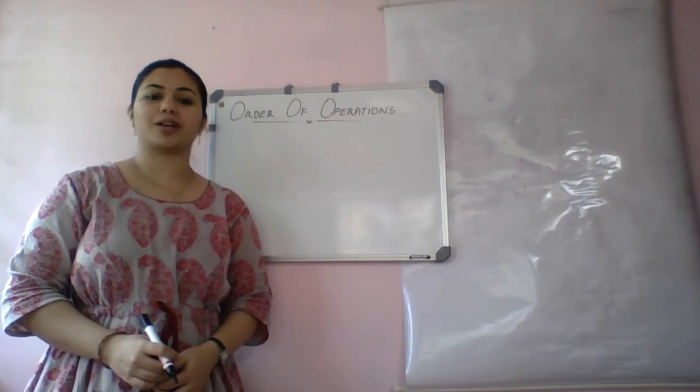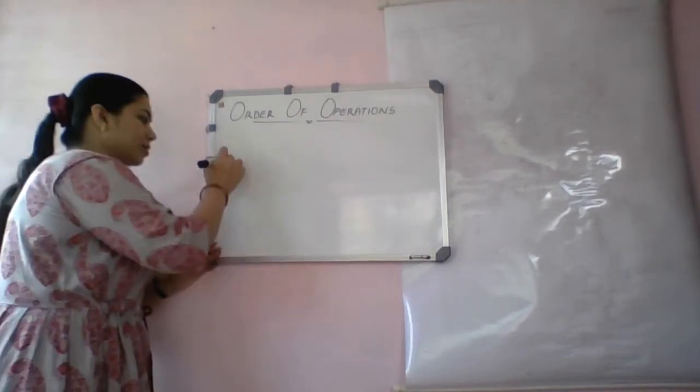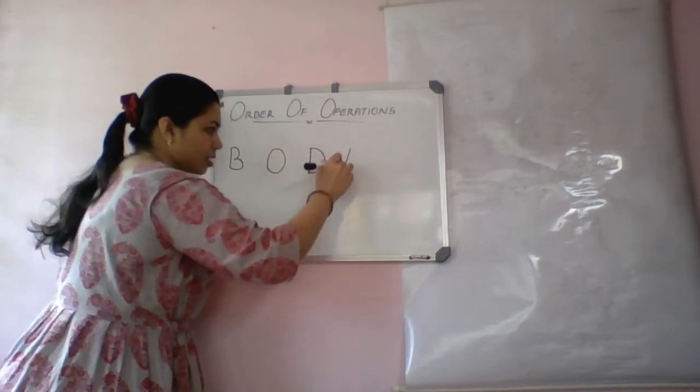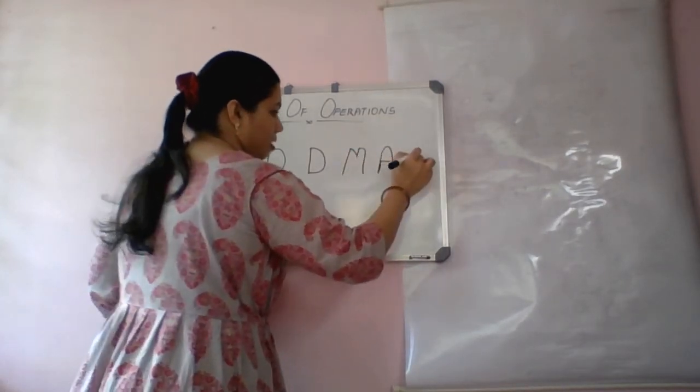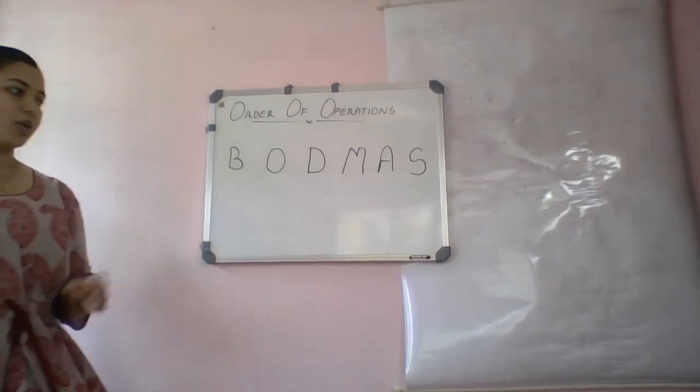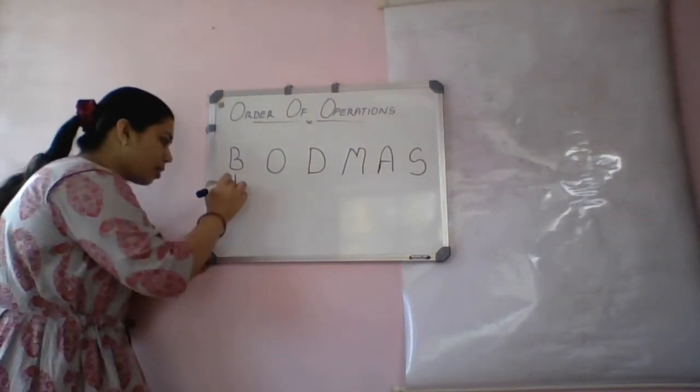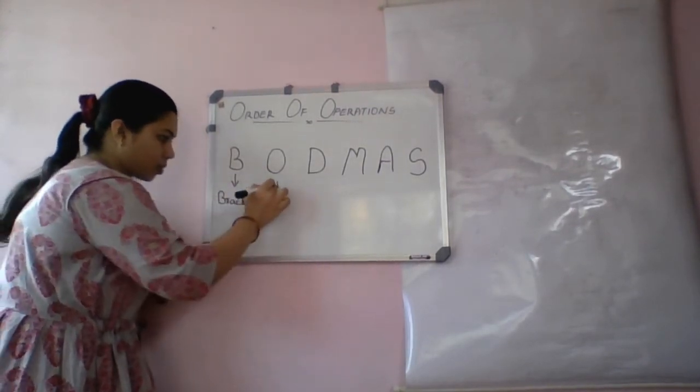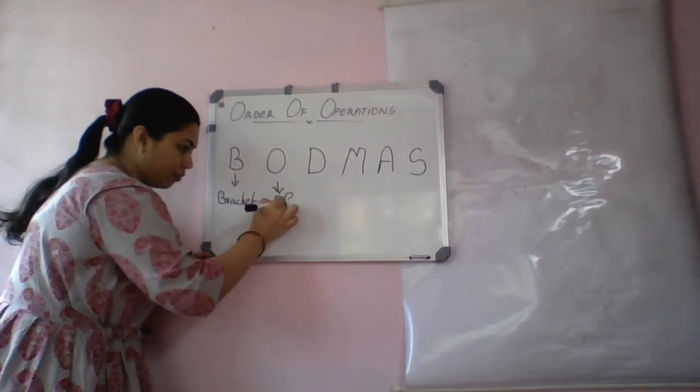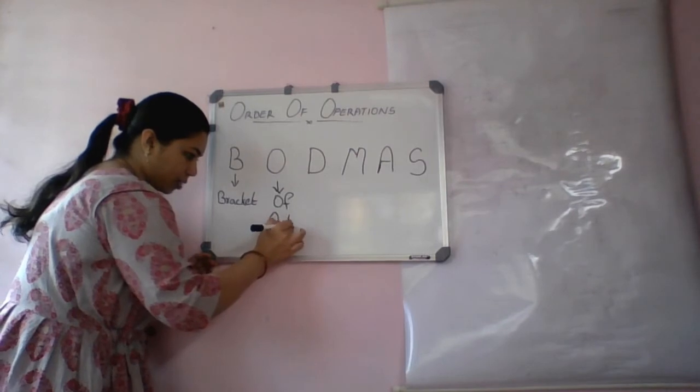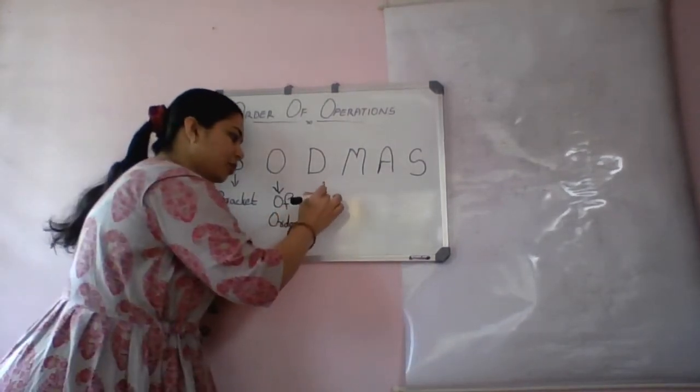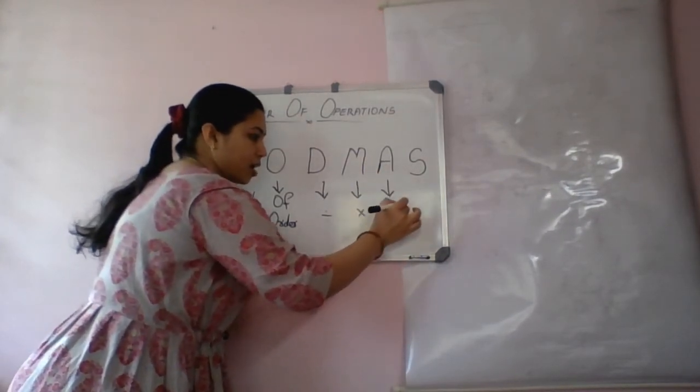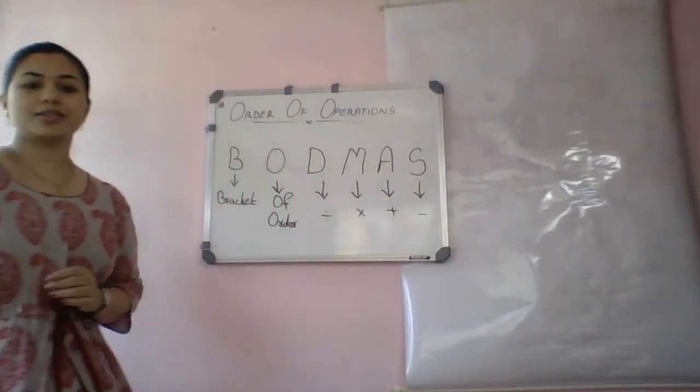For that, we have BODMAS rule. B, O, D, M, A, and S. So, what is the full form? B for brackets. O for of, for order. D for division. M for multiplication. A for addition. And S for subtraction.